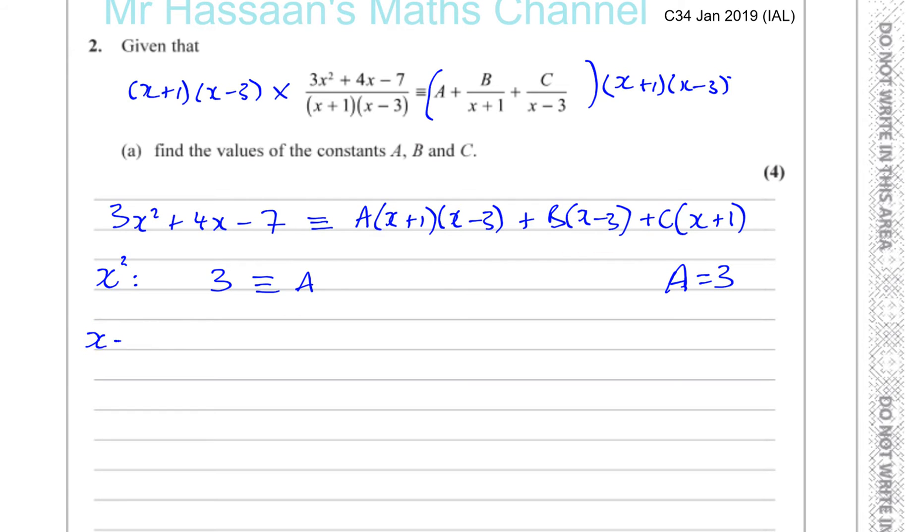If I substitute x equals -1 into this identity, on this side I'll have 3 times (-1)² + 4 times (-1) - 7. This will disappear, this will disappear, you're left only with this one, so you'll have B times (-1 - 3). So you're left with 3 times 1, which is positive 1, and -4 and -7 is equal to -4B. 3 - 4 is -1, -1 - 7 is -8. -8 is equal to -4B, so therefore B is equal to -8 divided by -4, which is positive 2.